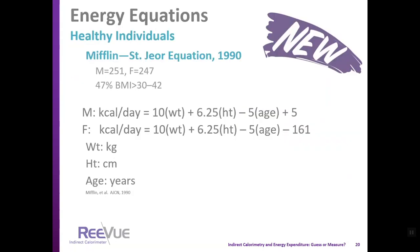An equation used primarily in the outpatient setting for healthy individuals is the Mifflin St. Geor equation. Although considered newer, it is from 1990 — nearly 30 years old. However, it was developed from almost 500 healthy individuals, several with a BMI greater than 30. It uses actual weight, height, and age to estimate resting metabolic rate in healthy individuals.